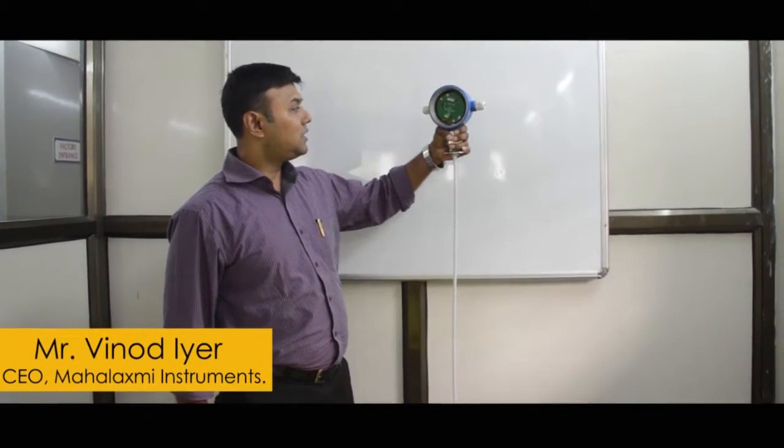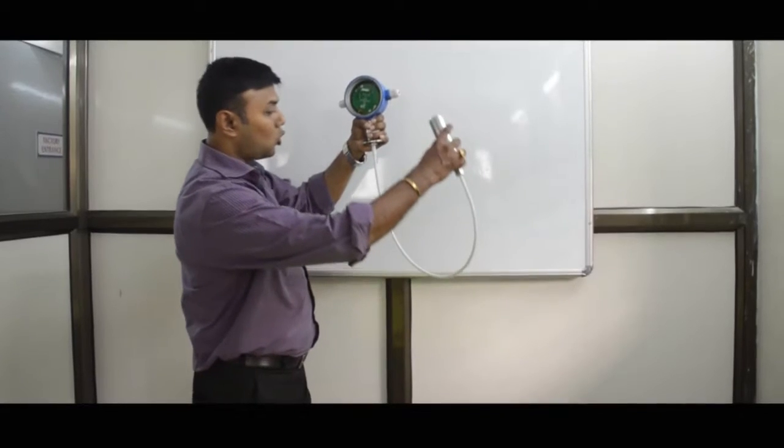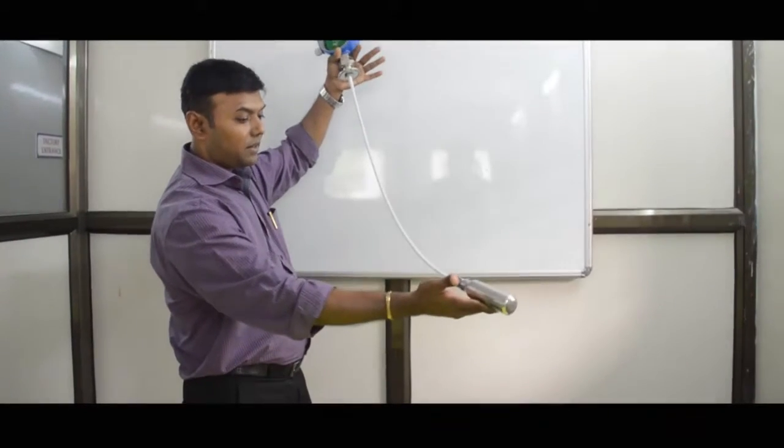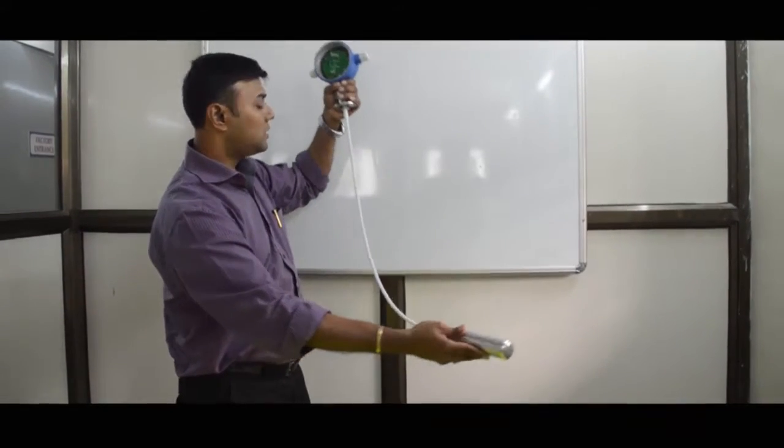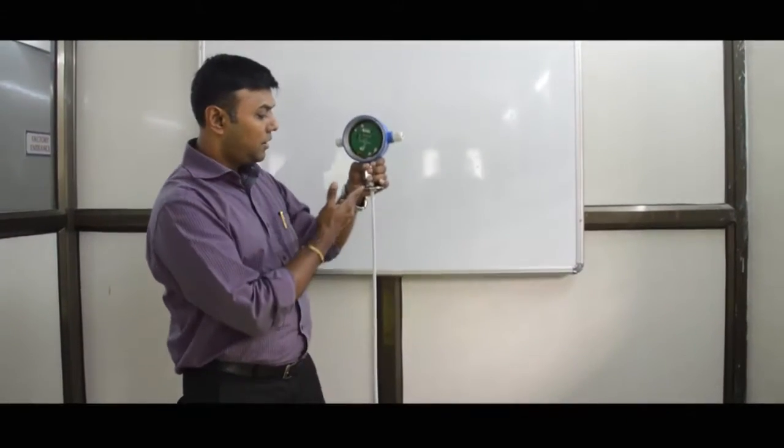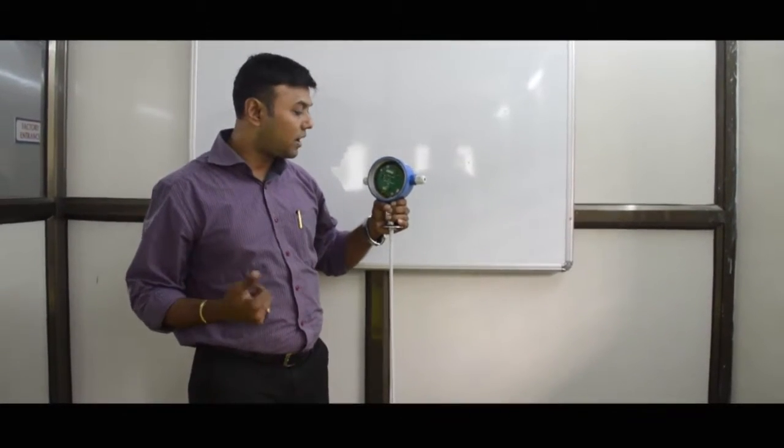Okay friends, this is a capacitance level transmitter, flexible rope type capacitance level transmitter. It is generally used in the pharma industry, and this is a tri-clover fitting. Tri-clover sizes can be different - one and a half inch, two inch, two and a half inch.